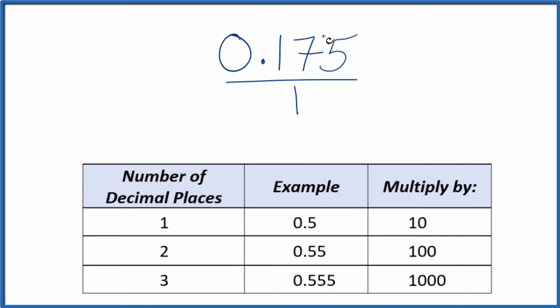We need to get this number up here to be a whole number, and I can see there are 1, 2, 3 decimal places. Three decimal places, we're going to multiply by a thousand. That'll give us a whole number.